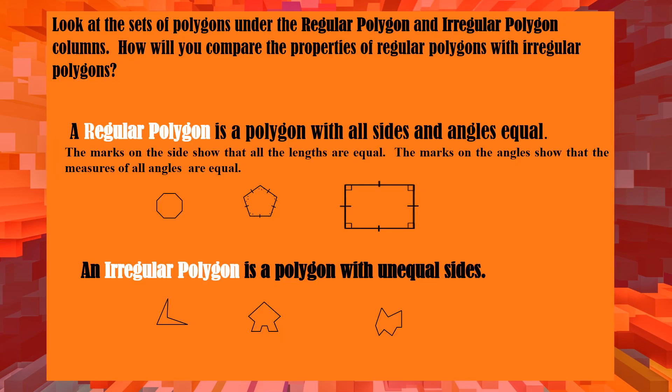Now look at the sets of polygons under the regular polygons and irregular polygons columns. How will you compare their properties? A regular polygon is a polygon with all sides and angles equal. The marks on the sides show that all lengths are equal, and the marks on the angles show that all angle measures are equal.